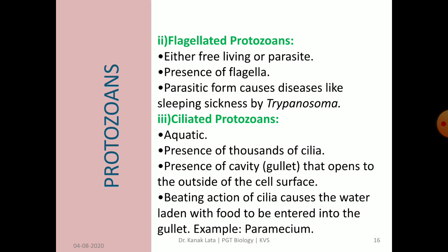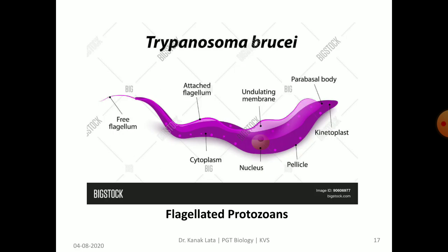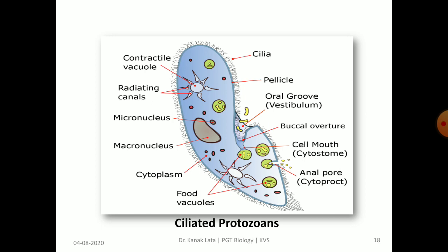The third group is ciliated protozoa. They are aquatic, having thousands of cilia as locomotory organelles. They have a cavity called a gullet that opens to the outside of the cell surface, and cilia also help in capturing food. A common example of ciliated protozoa is Paramecium. You can observe thousands of cilia present around the whole body surface, which help in capturing food and also in locomotion.